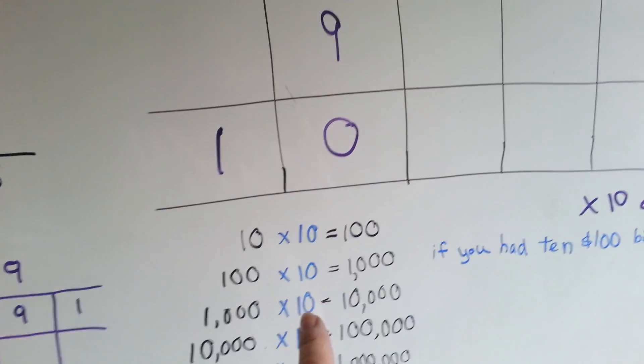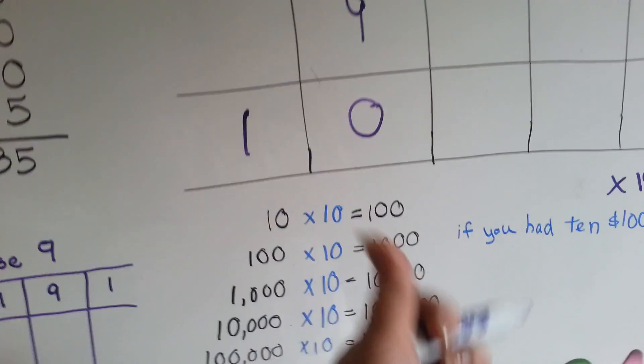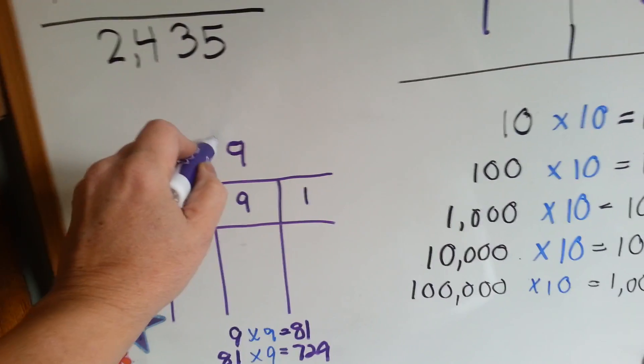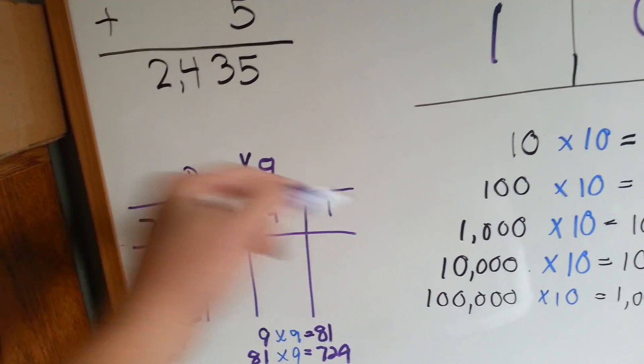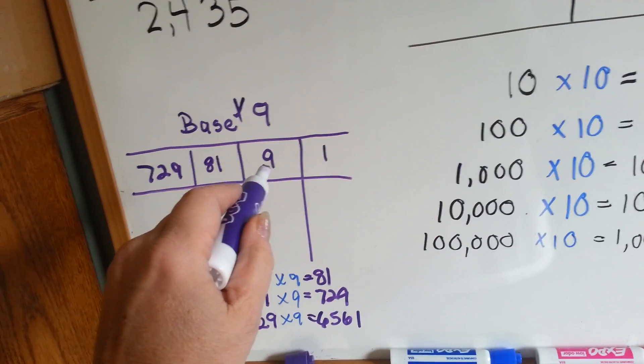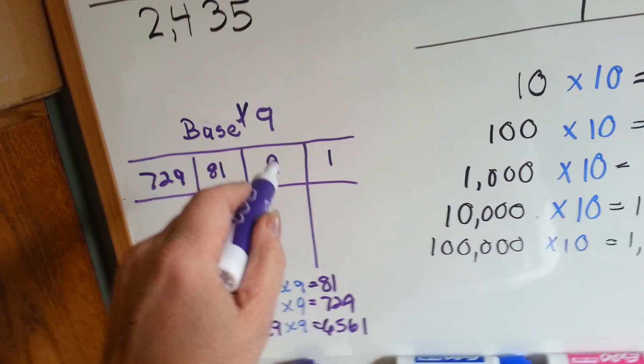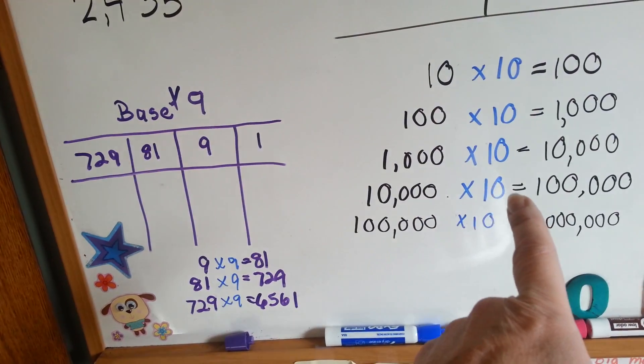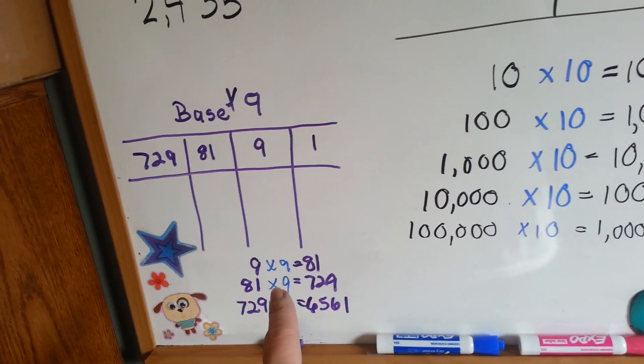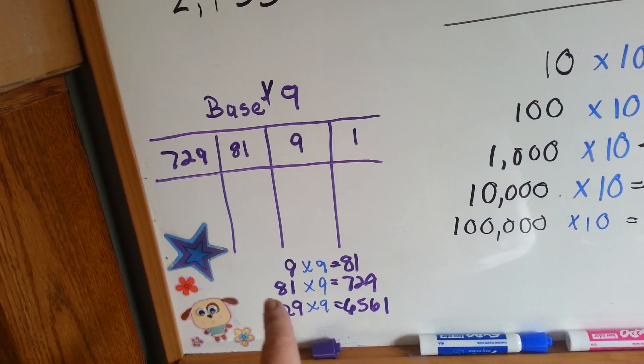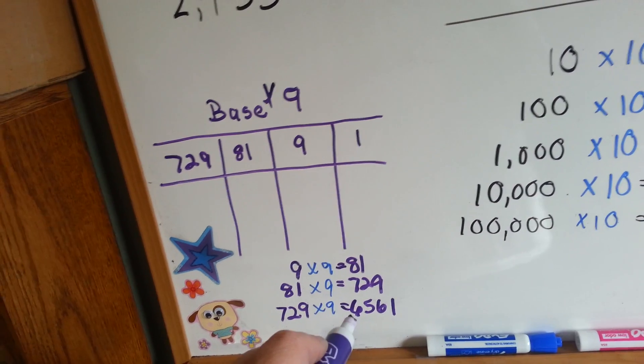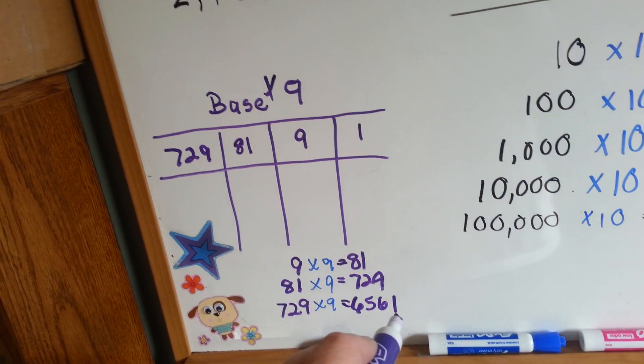Well, because in the base ten, we were multiplying by ten to get to our next number to the left. In base nine, we multiply by nine to get to the left. So one times nine is nine, so that's our nine. Nine times nine is eighty-one. See? Over here, we were saying by ten. In base nine, we multiply by nine. Eighty-one times nine is seven twenty-nine. Seven twenty-nine times nine is six thousand five hundred and sixty-one.